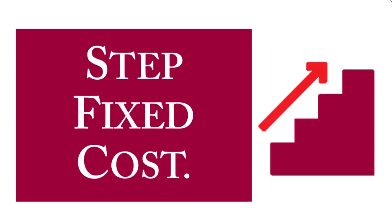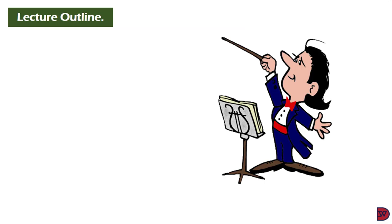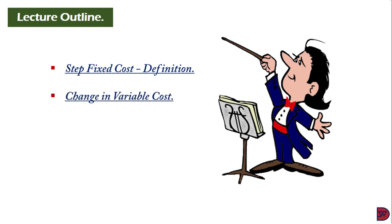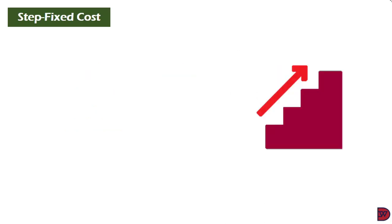We're going to take a quick look at the lecture outline. We'll first define step fixed cost, then discuss changes in variable cost, and then we will discuss the limitations of the high-low method.